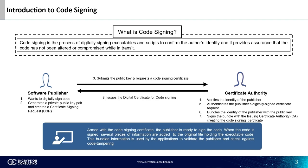Armed with the code signing certificate, the publisher is ready to sign code. When code is signed, several pieces are added to the original file holding the executable code. This bundled information is used by the application to validate the publisher and check against code tampering.